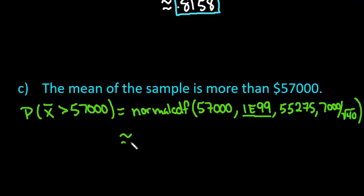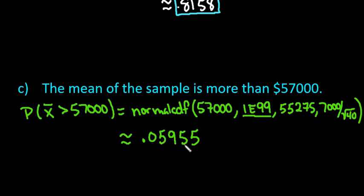Approximately 5.96% of the time this will happen. Even though it's a small percentage, it's still considered normal — five percent is the typical default threshold for unusual. Since 5.96% is just above five percent, this is borderline. If you got a sample mean of $57,000, it's more likely to happen than Part A but less likely than Part B. Thanks for watching — if you have any questions or need additional topics covered, please let me know.